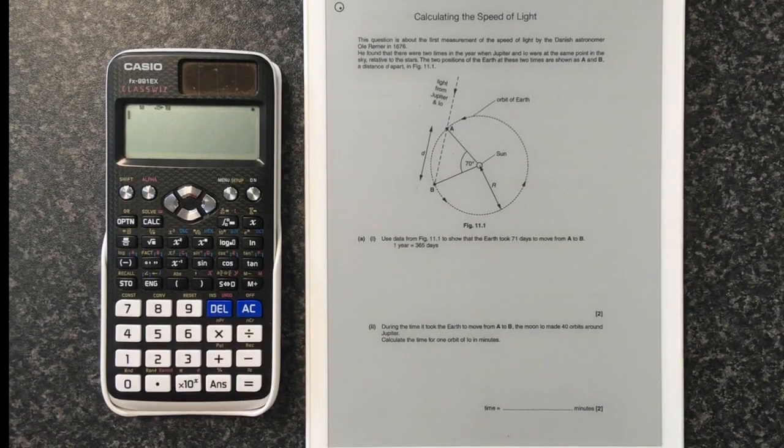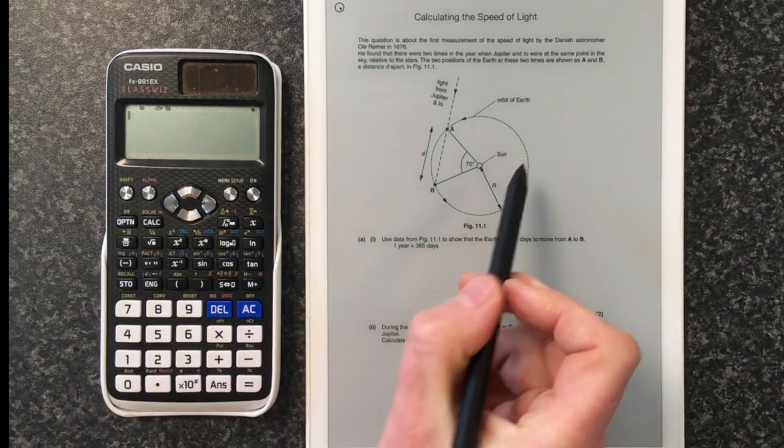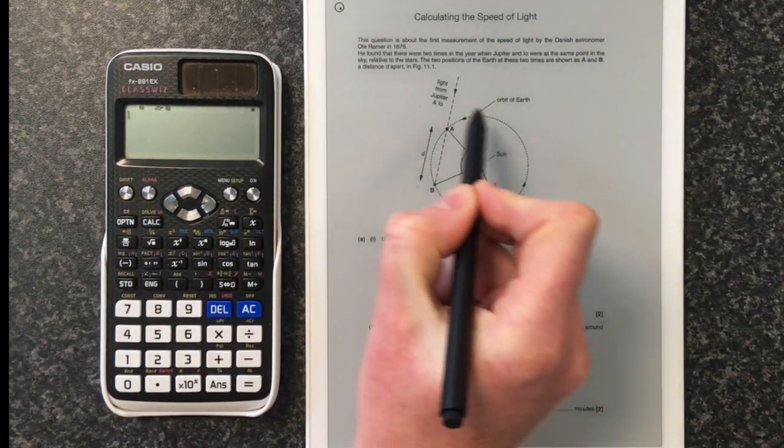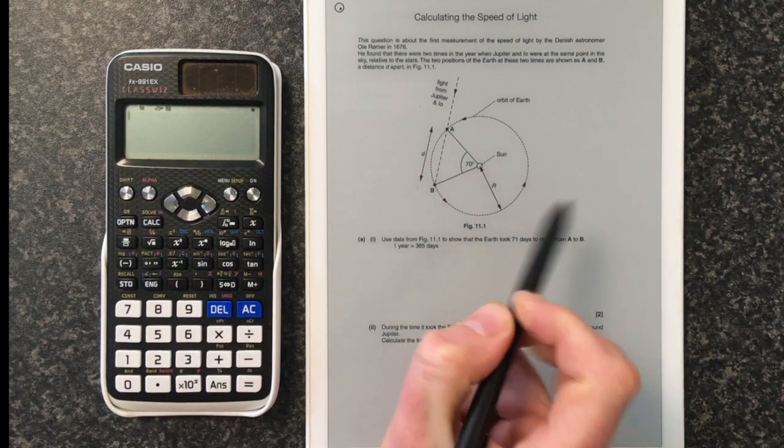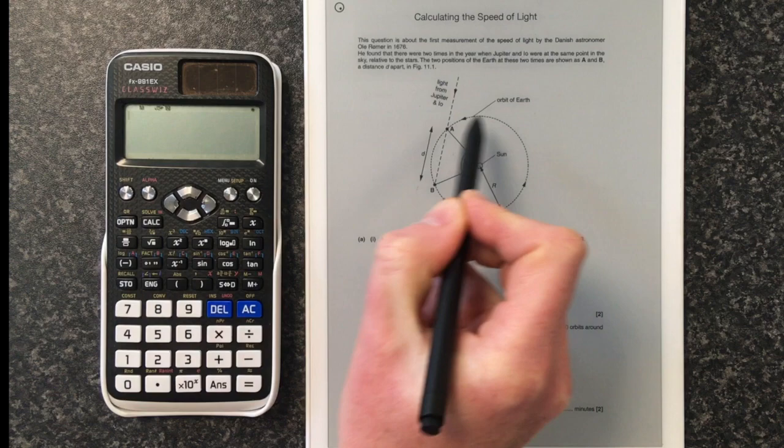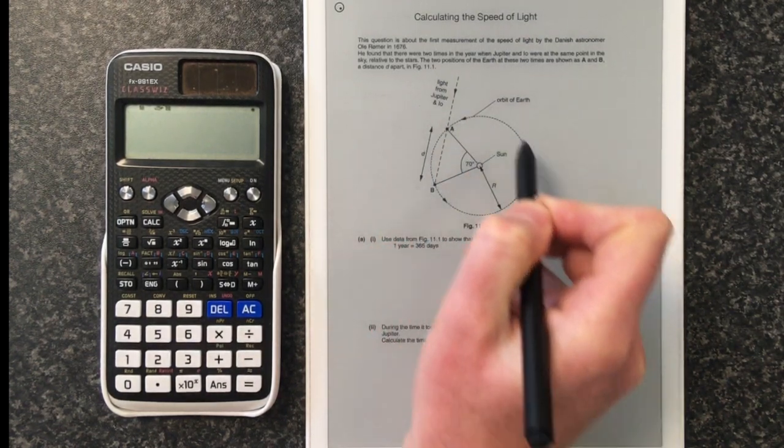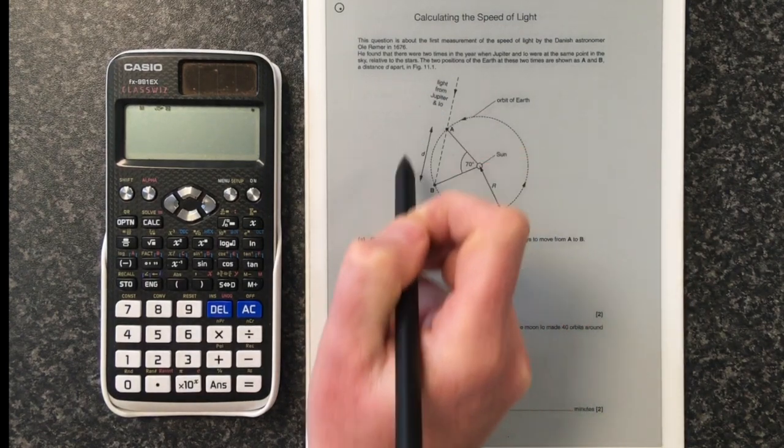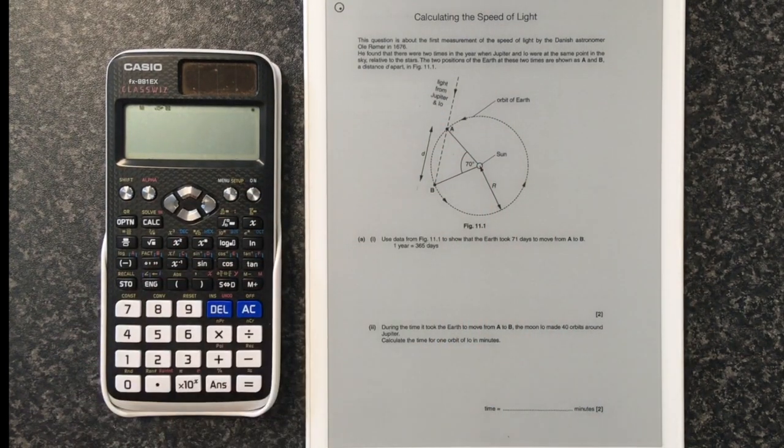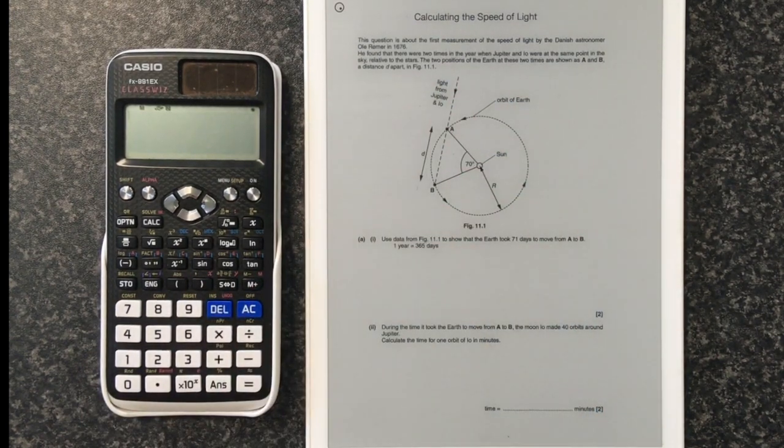Here's our question on calculating the speed of light using Römer's data. We've got this picture here of the Earth's orbit going all the way around the Sun at the center, and the Earth is a distance r, the radius, away from the Sun. To go all the way around is 360 degrees, and it covers that circle in 365 days. That's how many days are in a year.